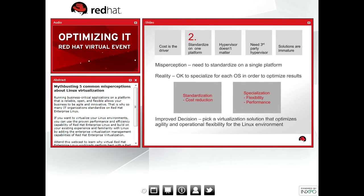Pick a solution that optimizes performance, functionality, and ease of management for each computing environment. The reality is it's okay to have multiple virtualization platforms. A recent survey conducted by Red Hat of its Linux customers showed that something like 70 percent of them are already using multiple virtualization platforms. I recommend that you pick a virtualization solution that optimizes agility and operational flexibility for Linux.